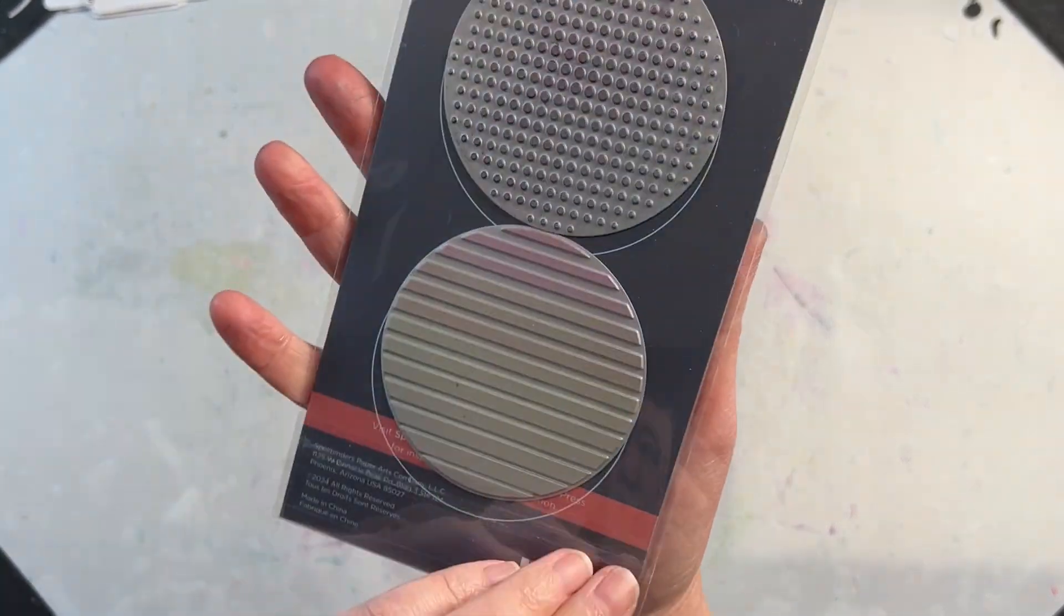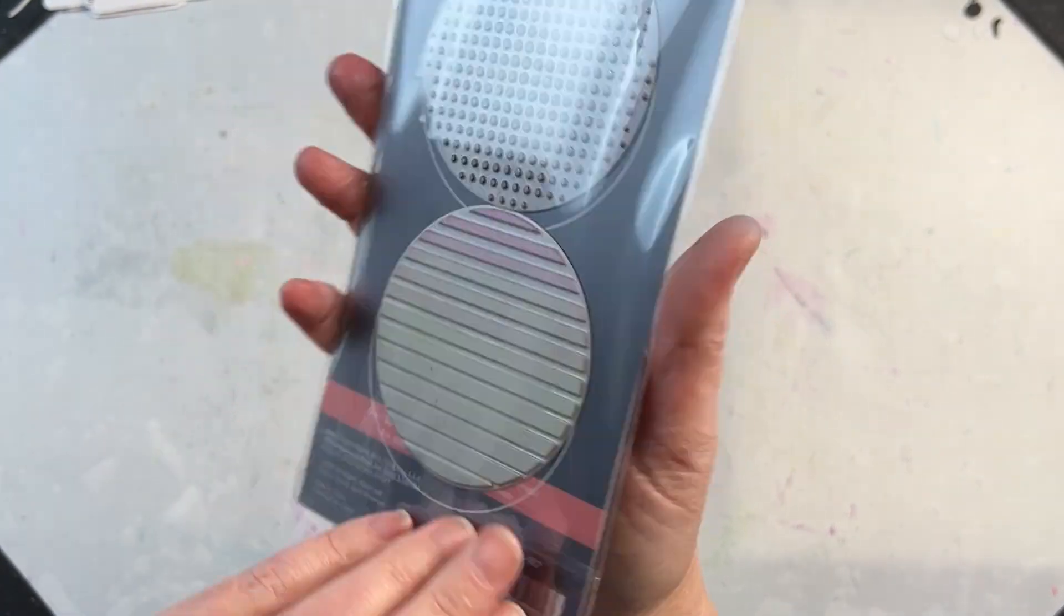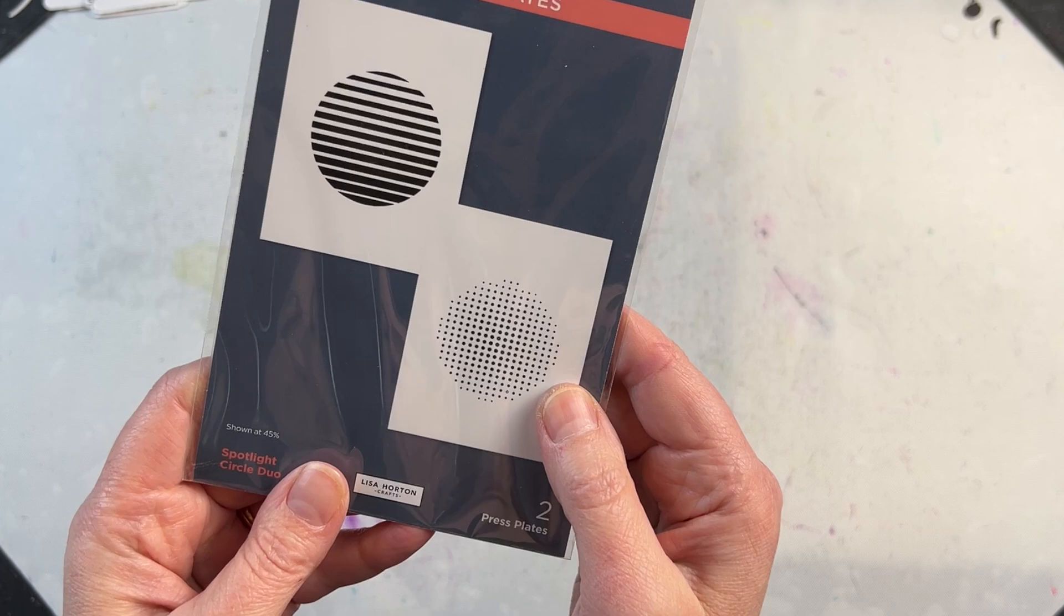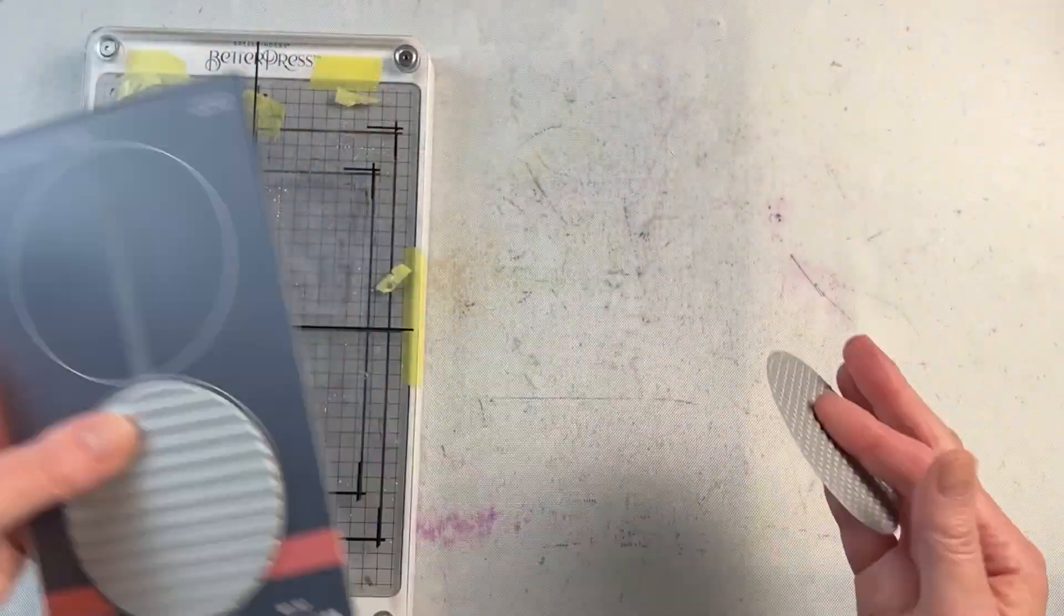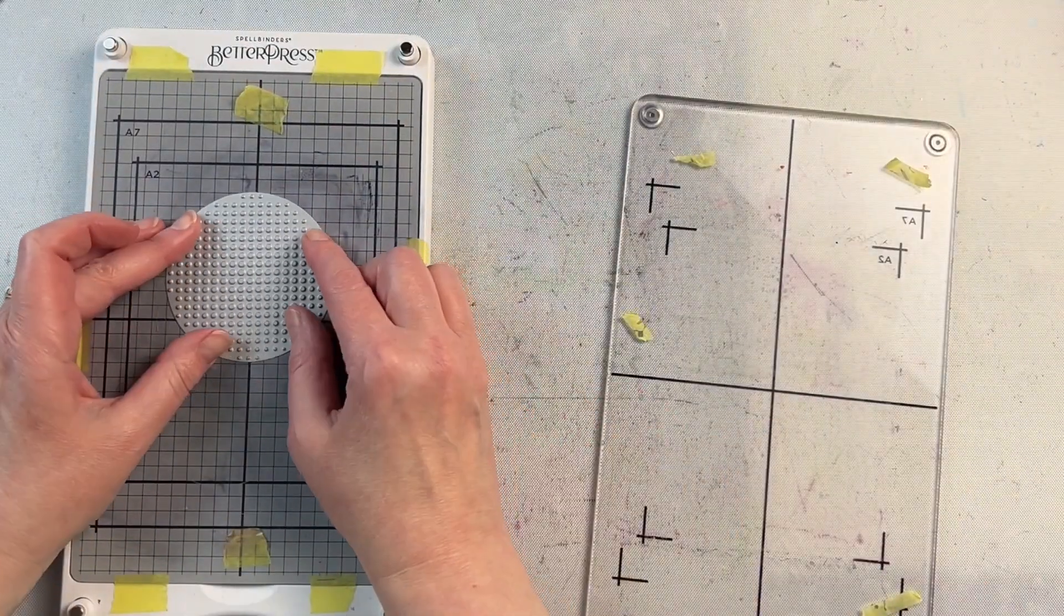This is the Spotlight Duo Press Plate Set from Spellbinders. There are two press plates in the set and they create unique circle pressed backgrounds for your cards.